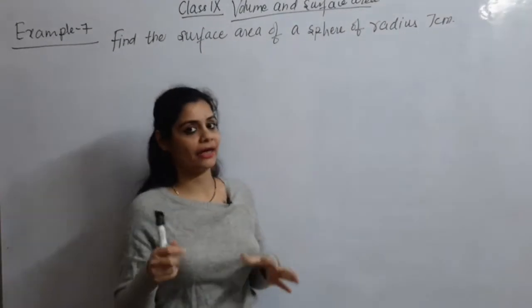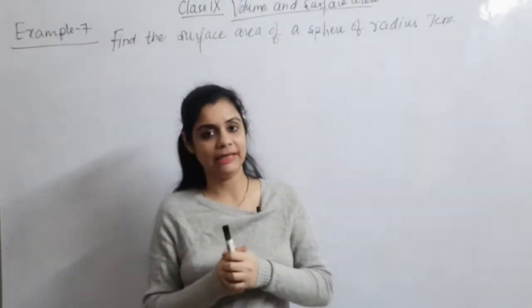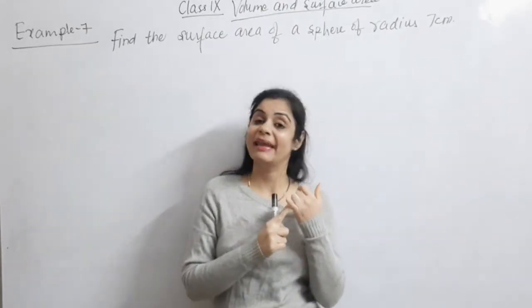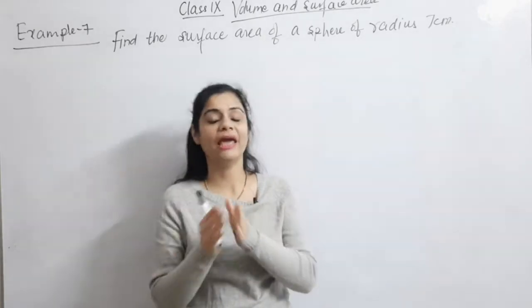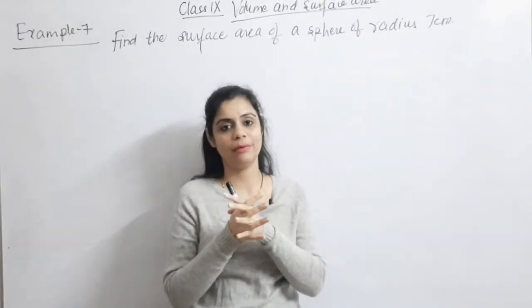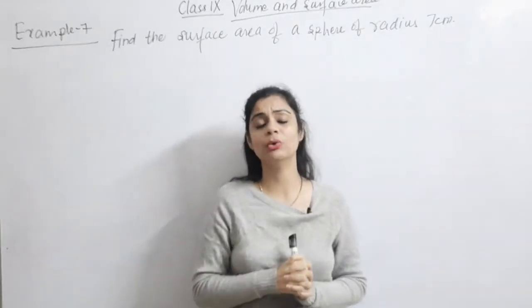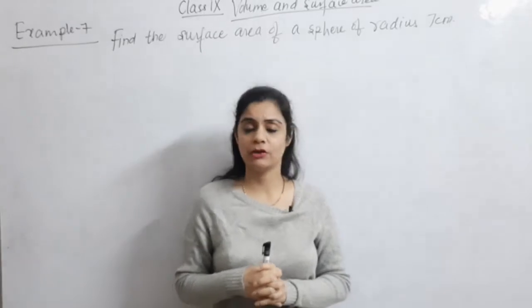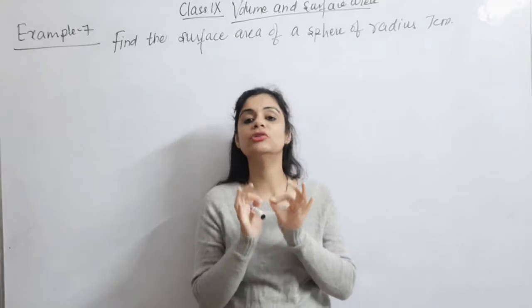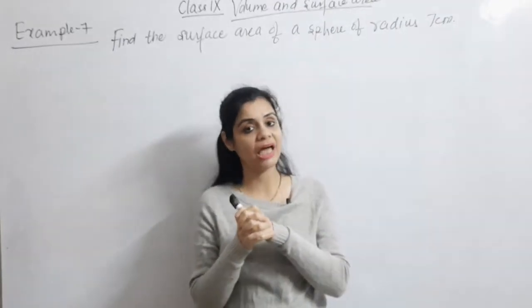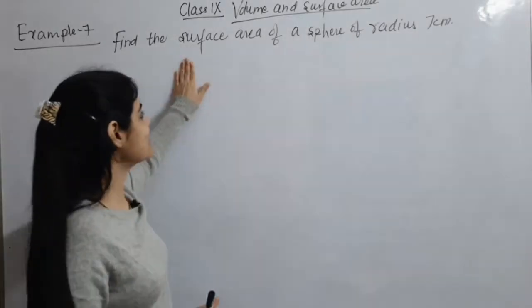Our next topic is the sphere. Let us recall the sphere formulas. I told you two formulas: one is volume and one is surface area. For a sphere, curved and total surface area are not separate — there is only one type of surface area. The volume of a sphere is 4/3 π r³ and the surface area is 4 π r².